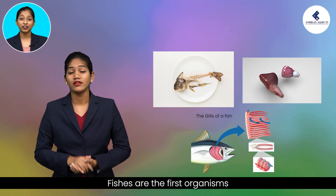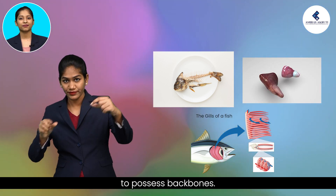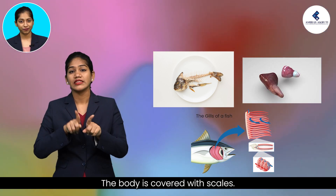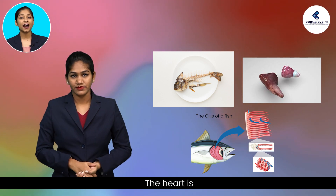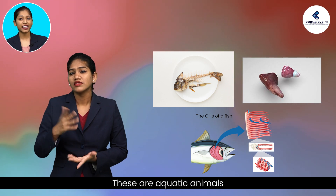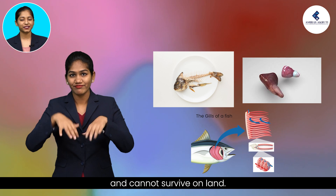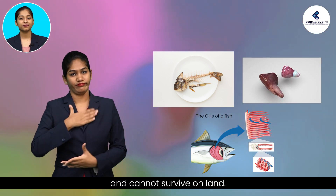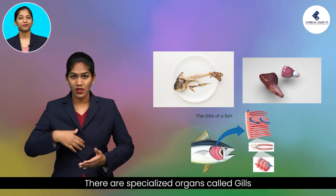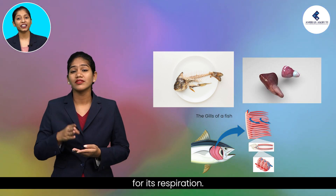Fishes are the first organisms to possess backbones. The body is covered with scales. The heart is two-chambered. These are aquatic animals and cannot survive on land. There are specialized organs called gills that are useful for their respiration.